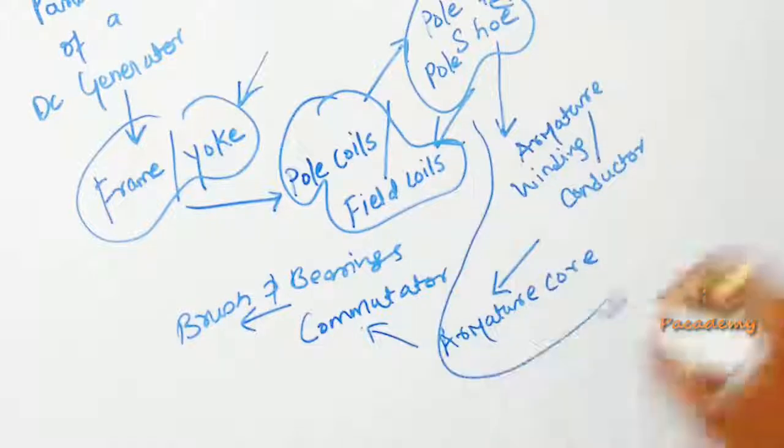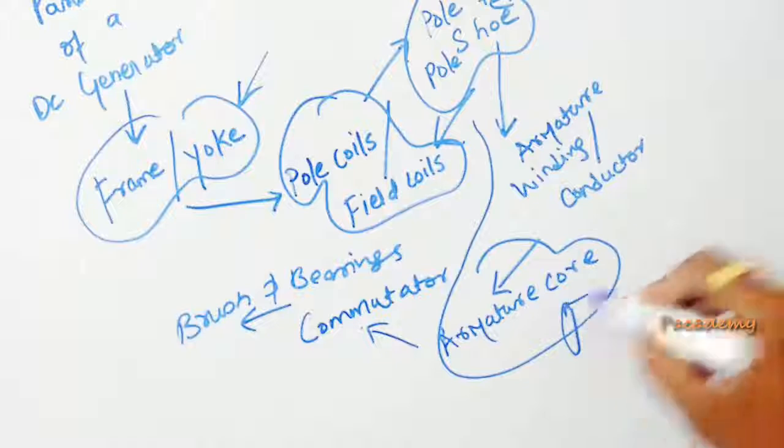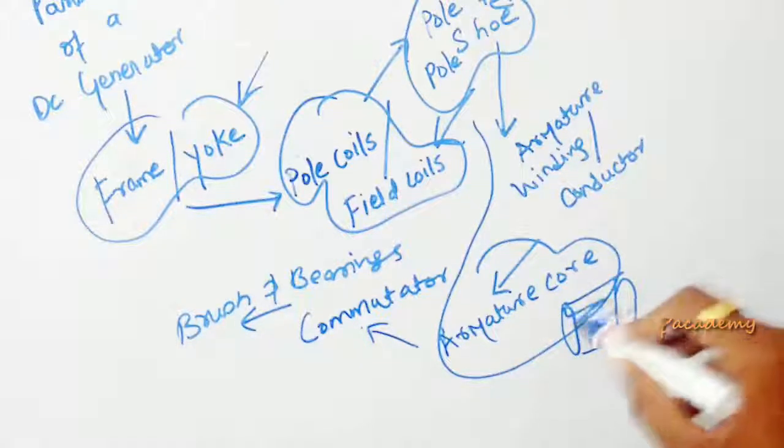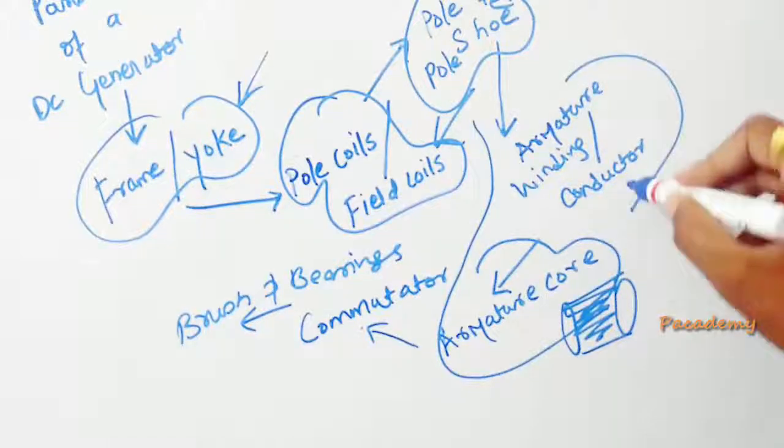The next important part is the armature core. The armature core is a cylindrical core on which the armature windings are wound.